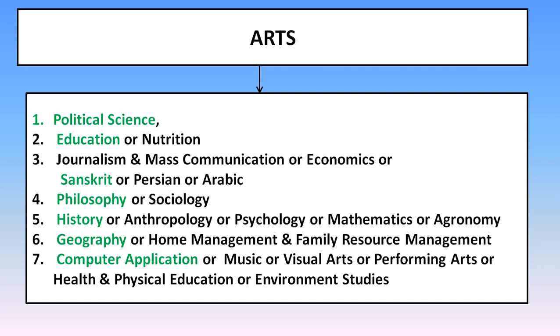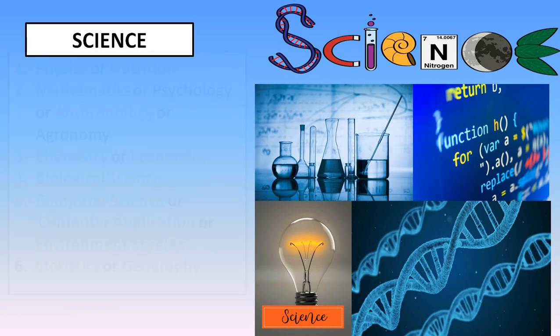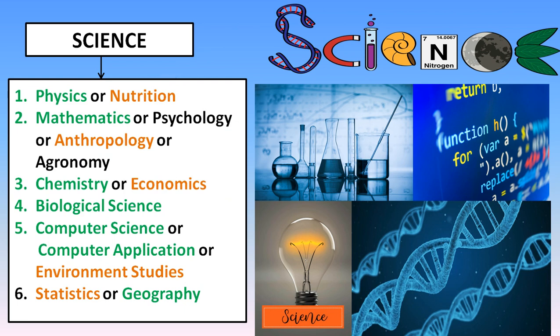According to the board, the best subject combinations in Arts include Political Science, Education, Philosophy, History, Geography, and Computer Application. The best subjects in Science are Physics, Mathematics, Chemistry, and Biological Science. The biology line does not include Computer Science or Computer Application.